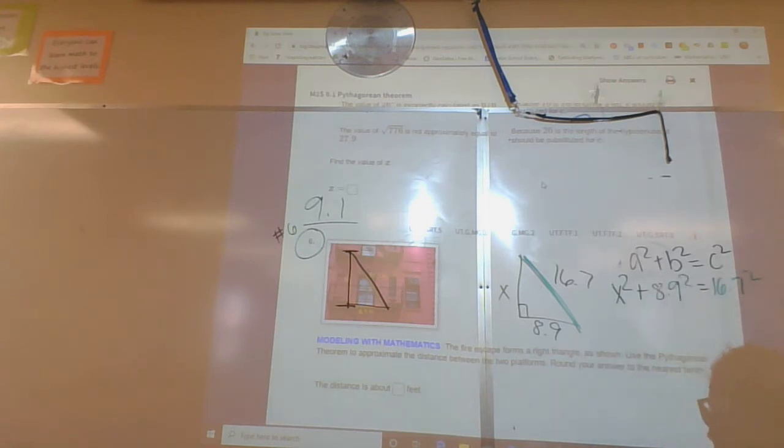Okay, now I just have to stick these little parts into my calculator right here. So here I have 8.9 squared is 79.21. So I get x squared plus 79.21 equals 16.7 squared is 278.89.